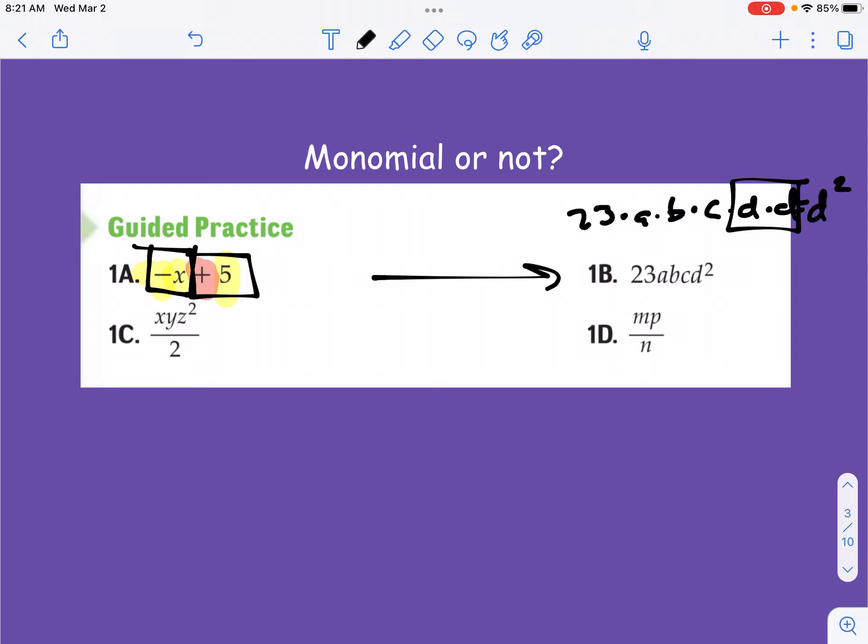So I think that when we look at this, hopefully we can see that this ticks all the boxes. Positive exponents, no other operations going on. This one right here, 1C, is also a monomial because even though it does look like there's division going on, this is basically a coefficient. So this is kind of the same as this. It's like 1 half times X, Y, Z squared. And so you can have any kind of number out front. So 1 half is absolutely fine, and then X, Y, and Z squared tick the boxes because you've got non-negative exponents going on with that.